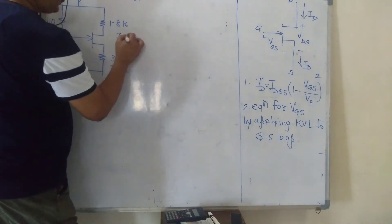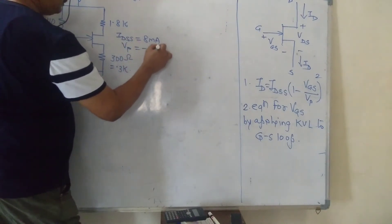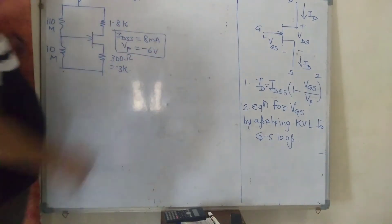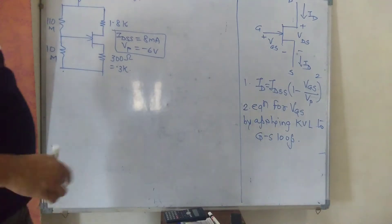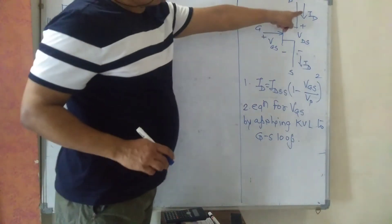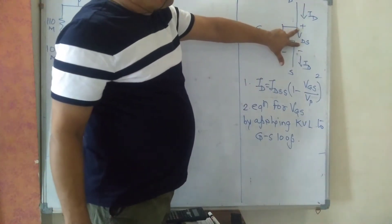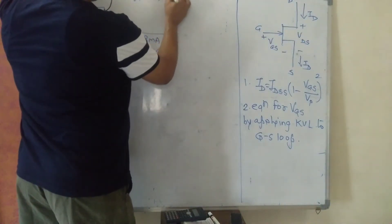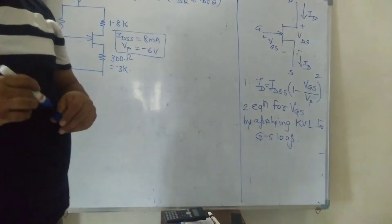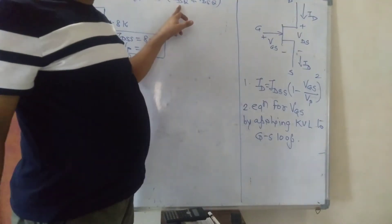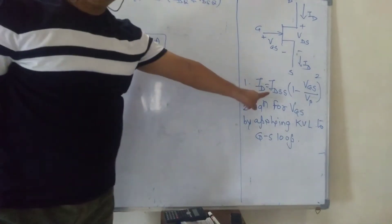The figure and data are given and we have to determine the Q point. Yesterday in Q point we calculated collector current IC and VCE. Today we will calculate ID and VDS. Q point means we have to calculate ID and VDS. So the first step is writing equation 1 for the given numerical.